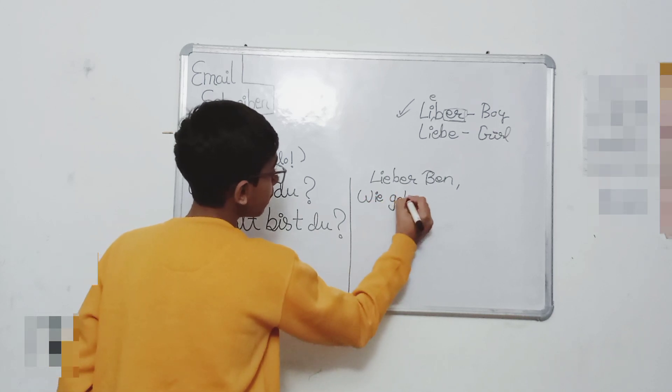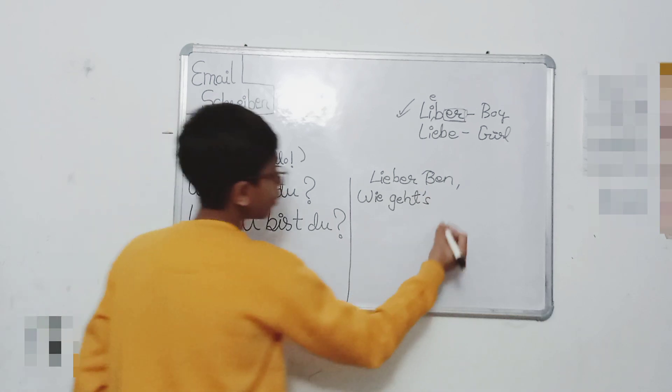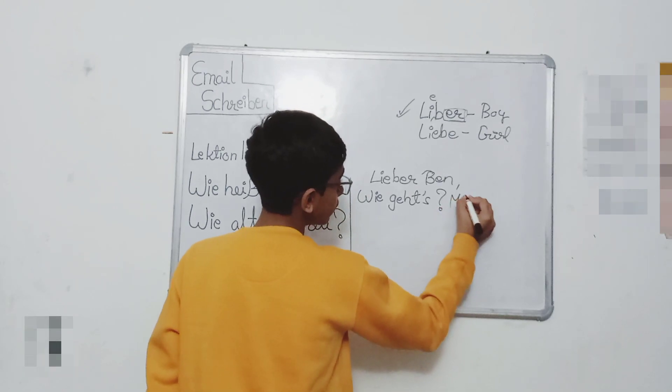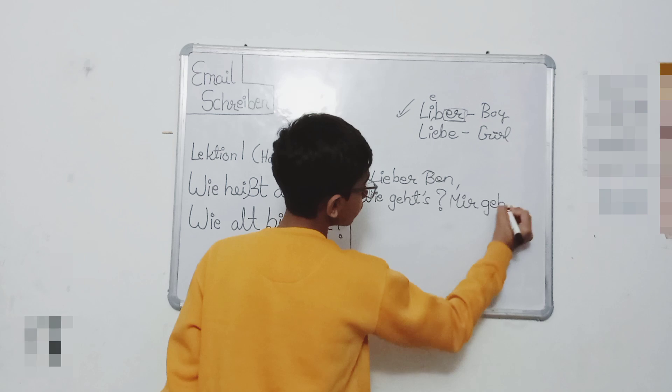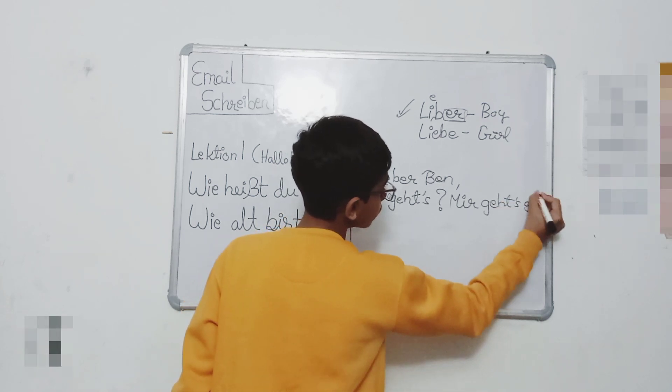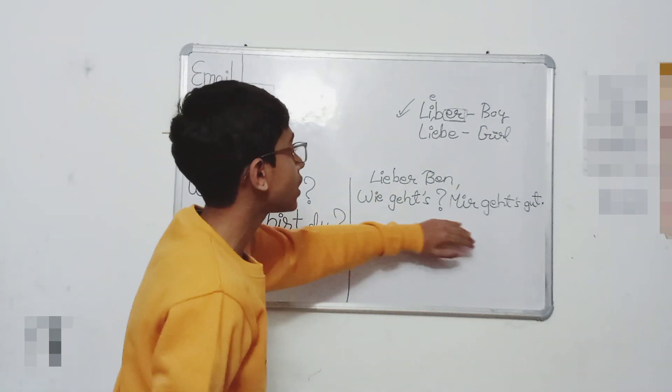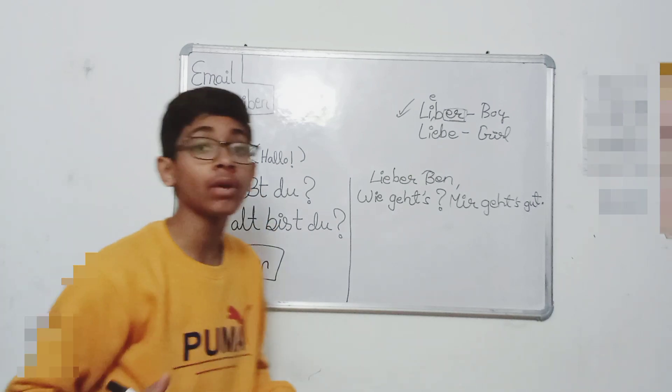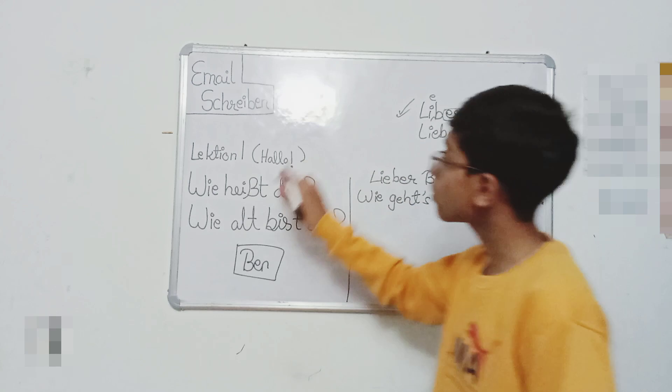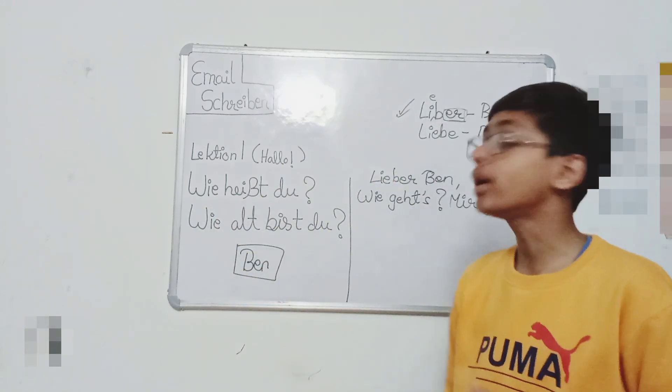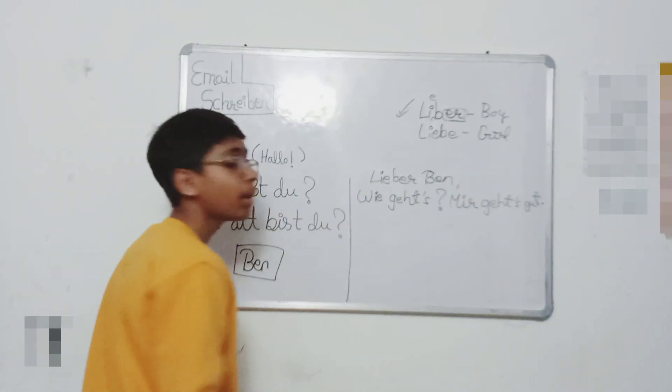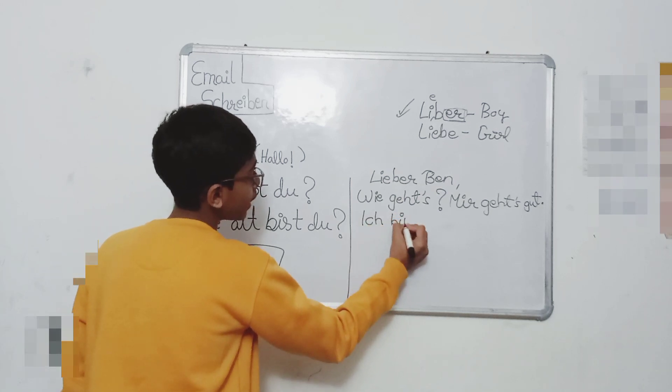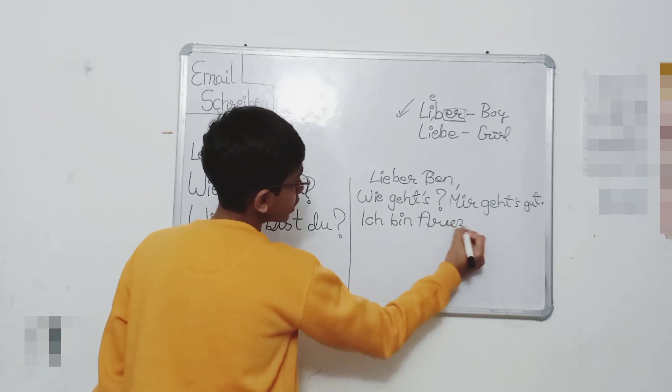First, we can write 'Wie geht's?' - How are you? Question mark, because a question is asked. And we also tell ourselves that I am good. When we take this question, we answer one by one. First question: What is your name? We simply write 'Ich bin Aries.' You will write your own name.